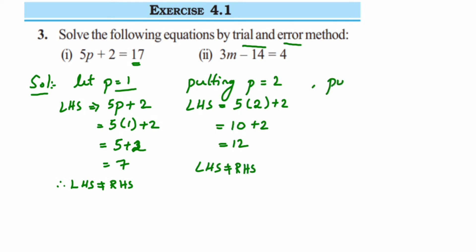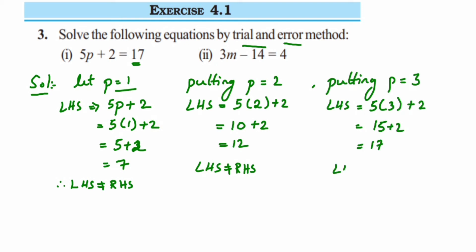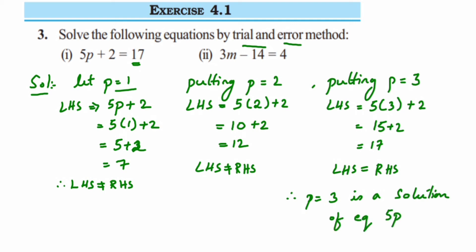Now putting p equal to 3: LHS will be 5 into 3 plus 2, which is 15 plus 2, which is equal to 17. Here LHS is equal to RHS — both are 17. Therefore p equal to 3 is a solution of the equation 5p plus 2 equal to 17. This is how we substitute different values in the given variable to find the answer.